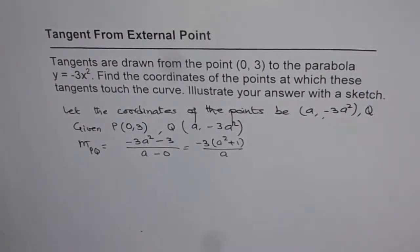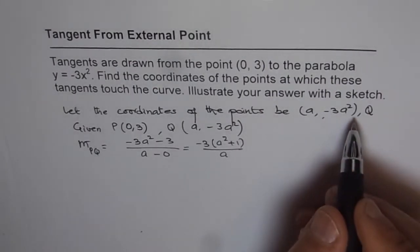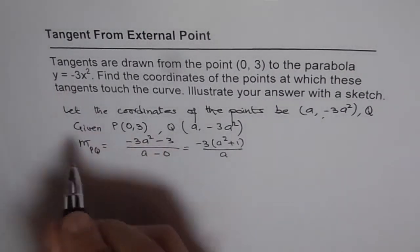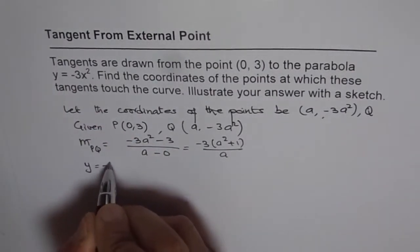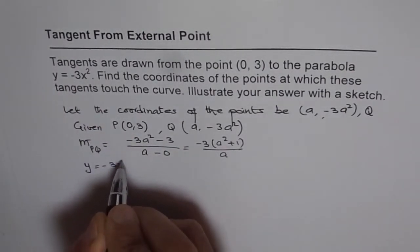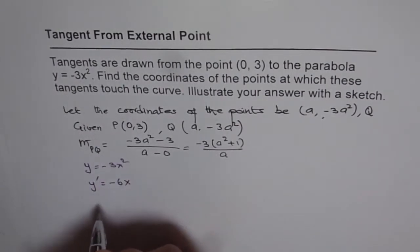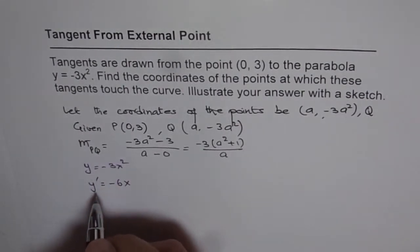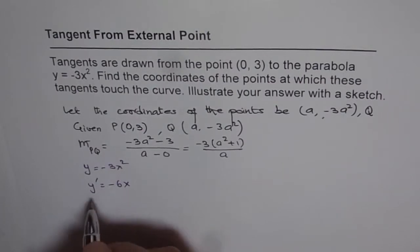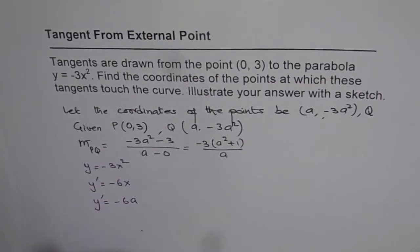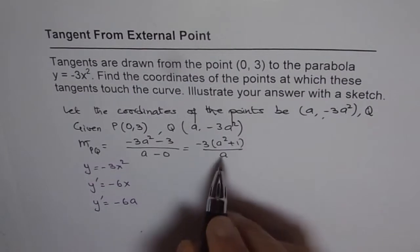That becomes the slope between these two points. We can also find the slope using the derivative. We have y equals minus 3x squared, and the derivative y' is minus 6x. At x equals a, the derivative is going to be minus 6a. So that is the derivative at x equals a.